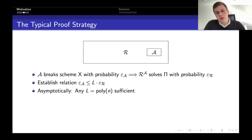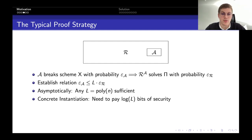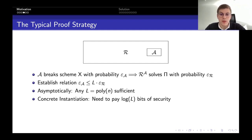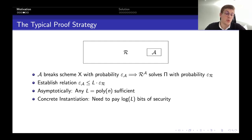For example, if your security loss is 2 to the 30 — the number of users in the system — then you need to pay 30 bits of security. Concretely, if you want to achieve 128-bit security and your security loss is the number of users, which can be 2 to the 30, then you need to set the parameters of the underlying assumption to support 158-bit security, which leads to inefficient concrete parameters.